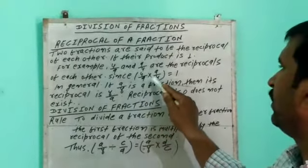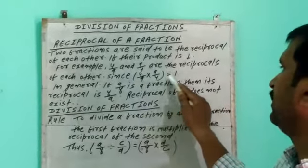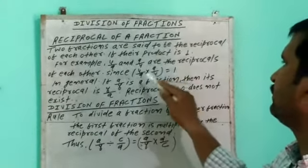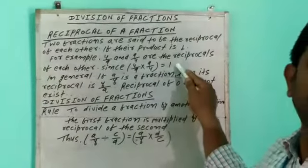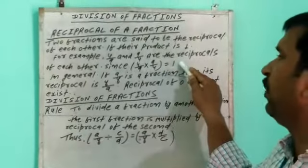Since 4/9 and 9/4 is equal to 1, what is the product? This is the result of each other.